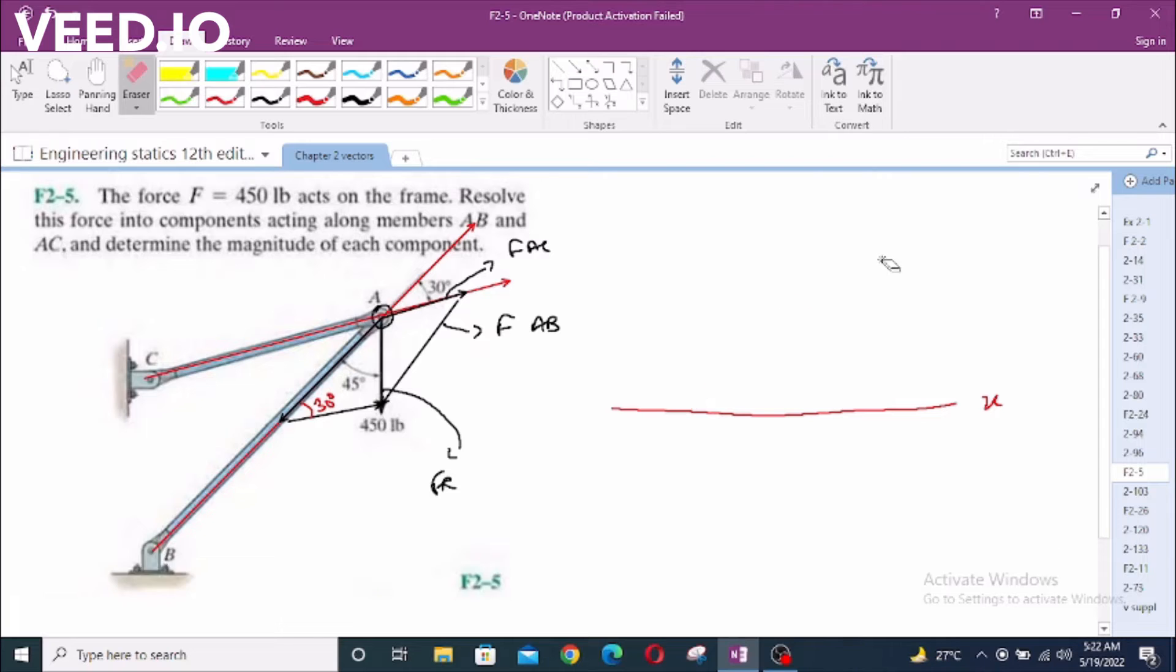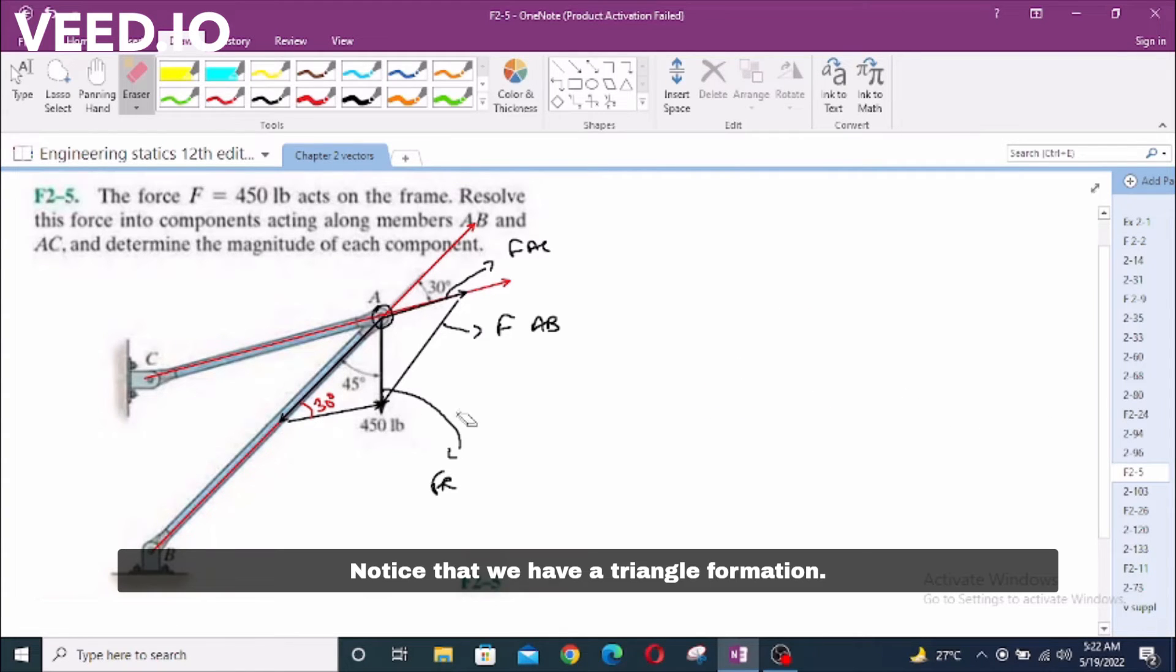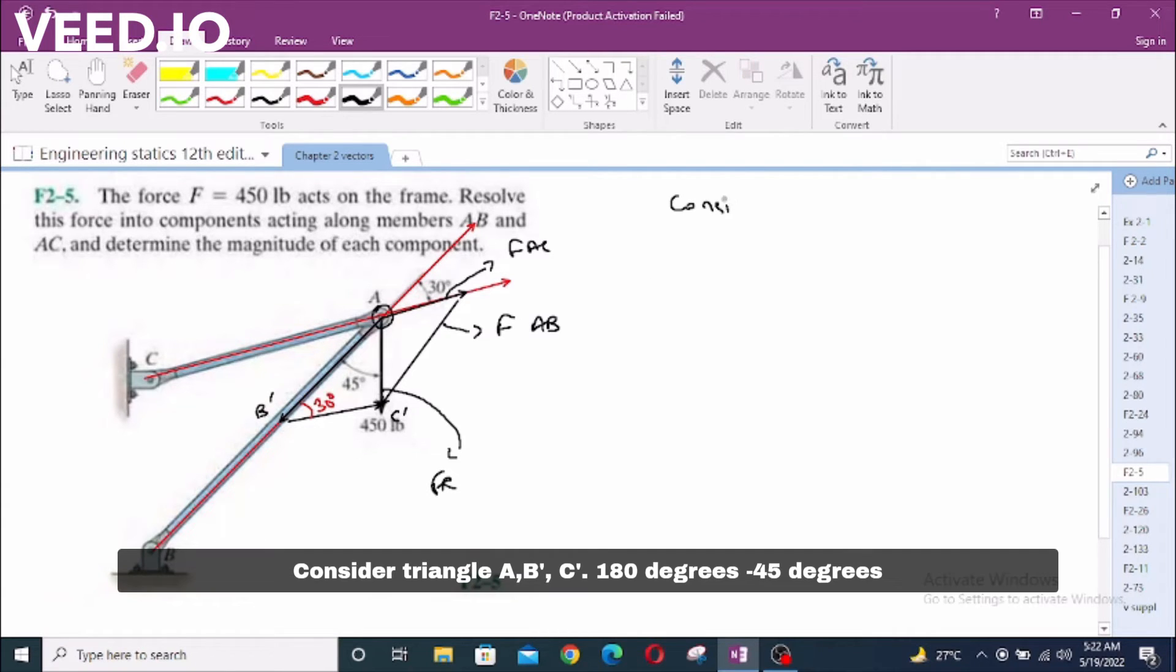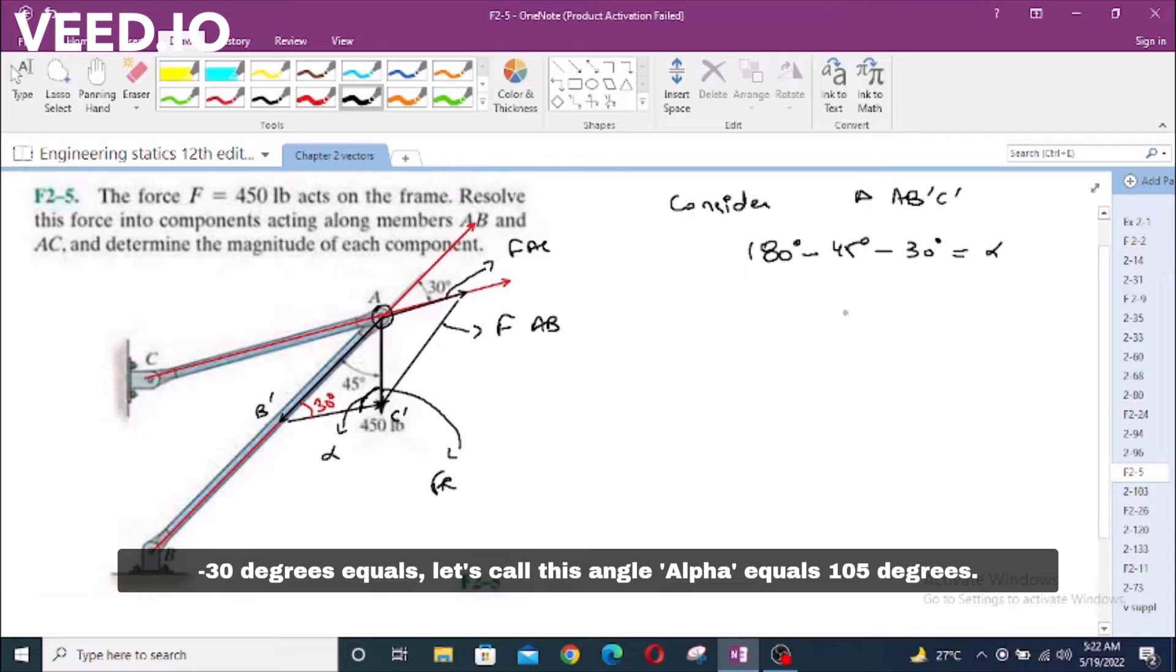For the third angle, notice that we have a triangle formation. Let's call this B dash and C dash. Consider triangle A B dash C dash. We have 180 minus 45 degrees minus 30 degrees equals this angle. Let's call this alpha. Alpha equals 105 degrees.